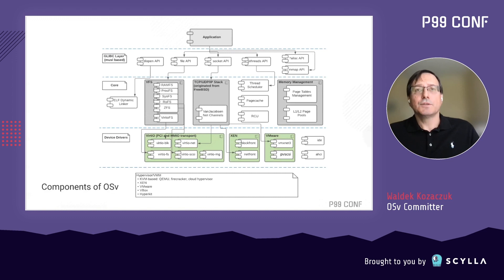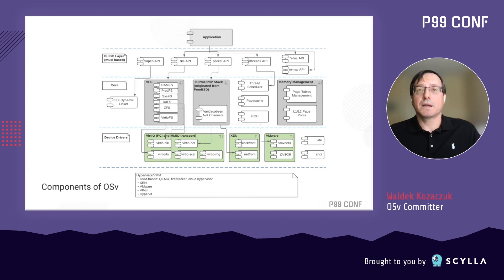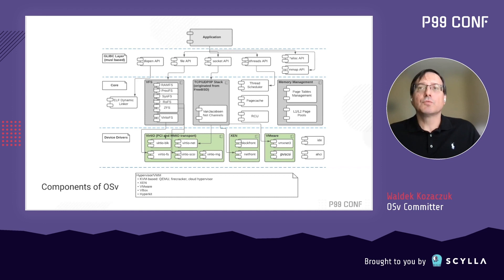In this slide, you can see the major components of OSV across the logical layers. Starting with libc at the top, which is greatly based on musl, then the core layer in the middle comprised of ELF Dynamic Linker, VFS, Networking Stack, Thread Scheduler, PageCache, RCU, and Memory Management components. Then the lower layer is composed of clock, block, and networking device drivers that allow OSV to interact with hypervisors like VMware and VirtualBox, or ones based on KVM and Xen. I'll leave you with this diagram as a reference if you want to learn more about OSV's design later.